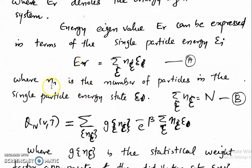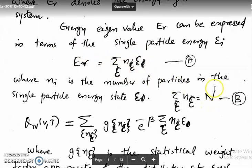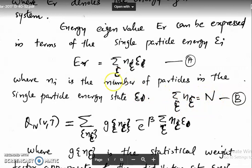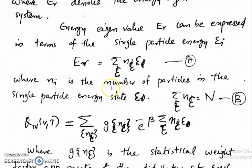Here this is n_epsilon, not n_i. We will be considering single particle levels. So n_epsilon is the number of particles in the single particle energy state epsilon. When you take this summation, you get the total energy eigenvalue. The condition is that the total number of particles is constant: sigma over epsilon of n_epsilon equals N. We are not considering cells as in the previous section — we are considering individual single particle levels.